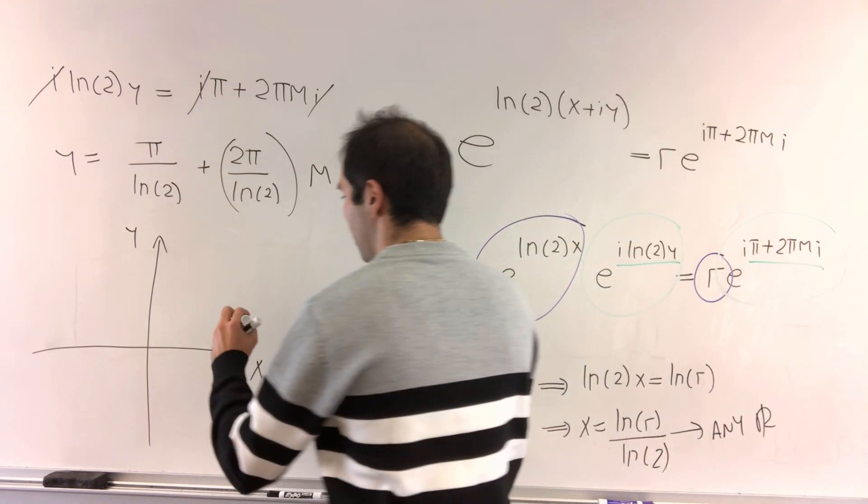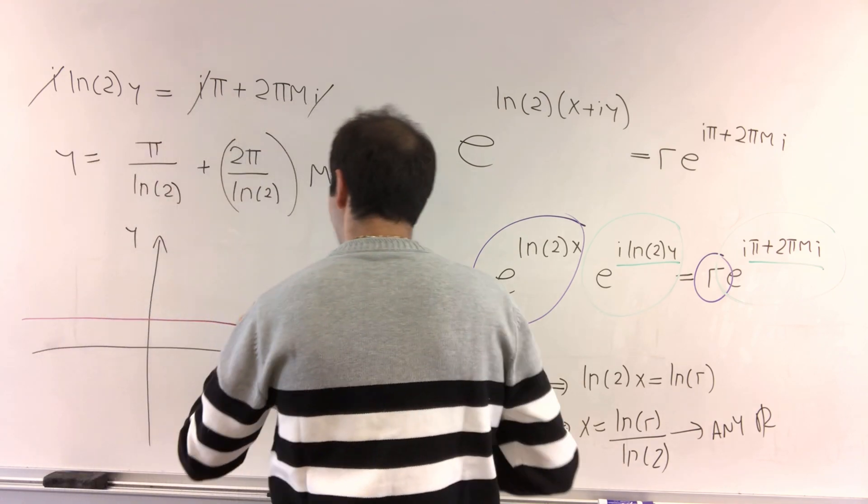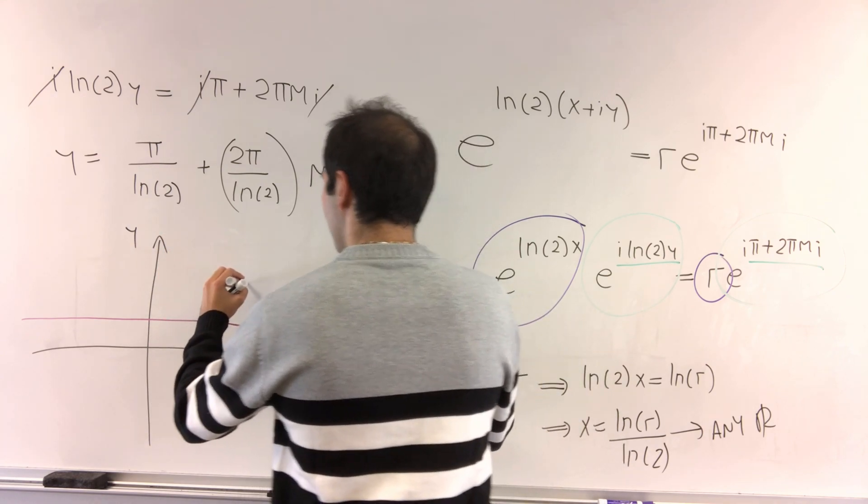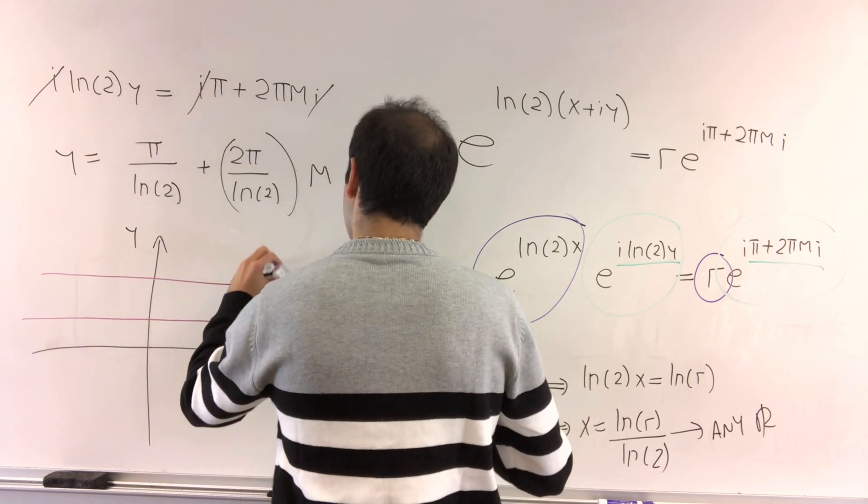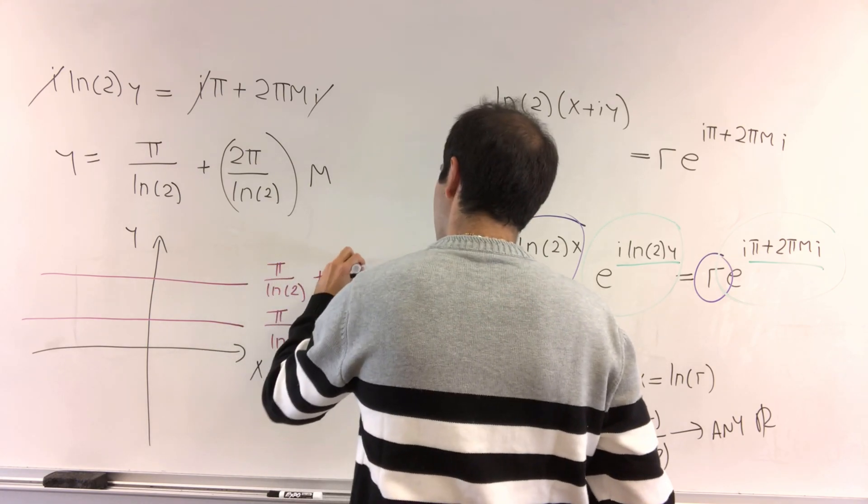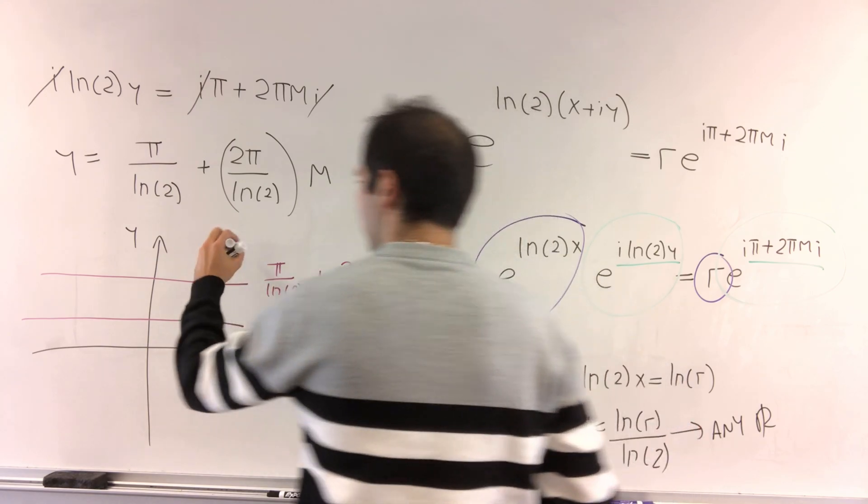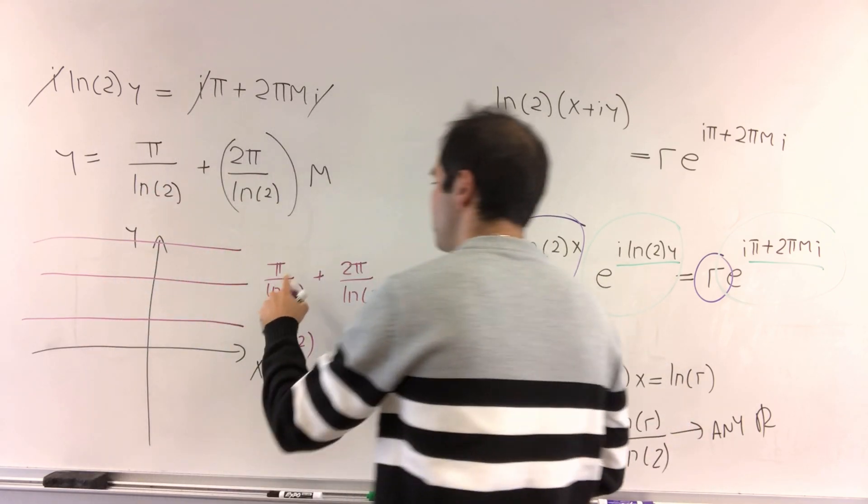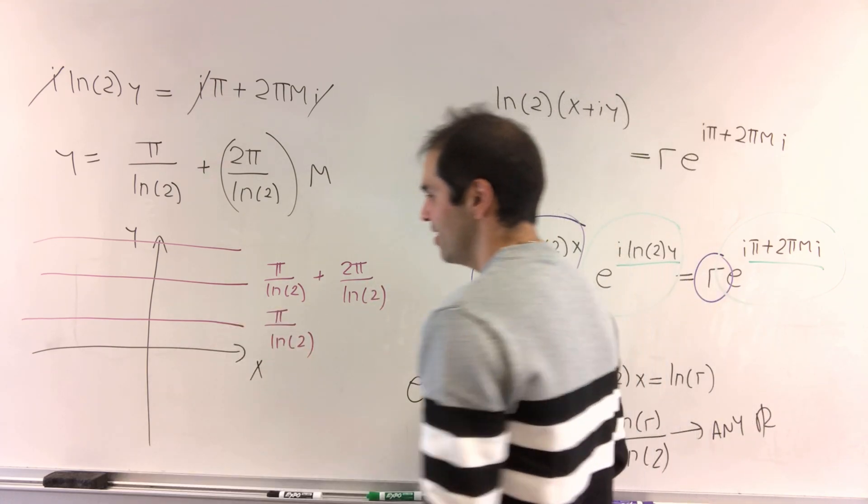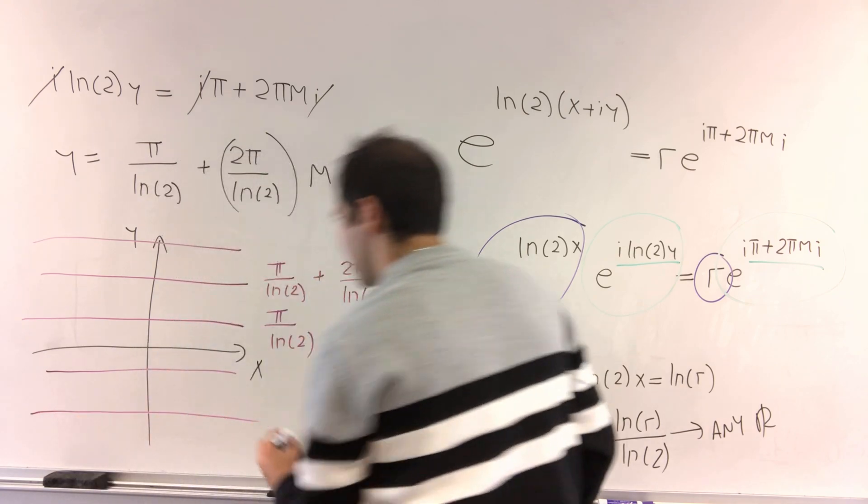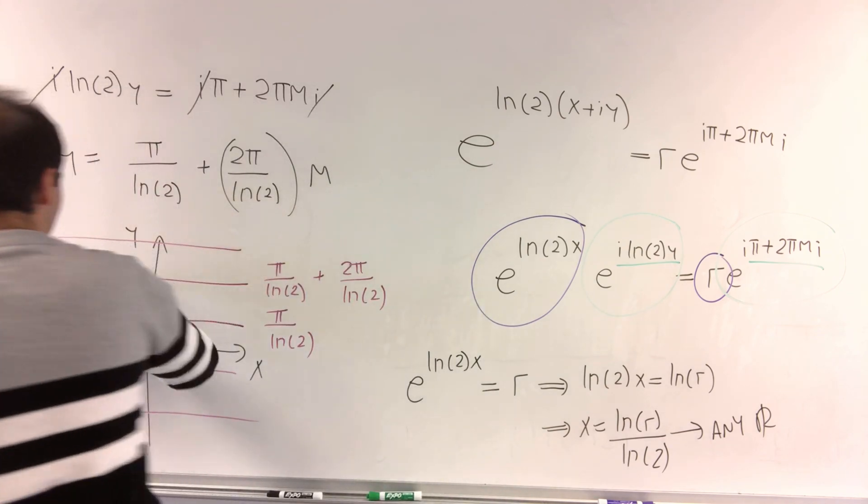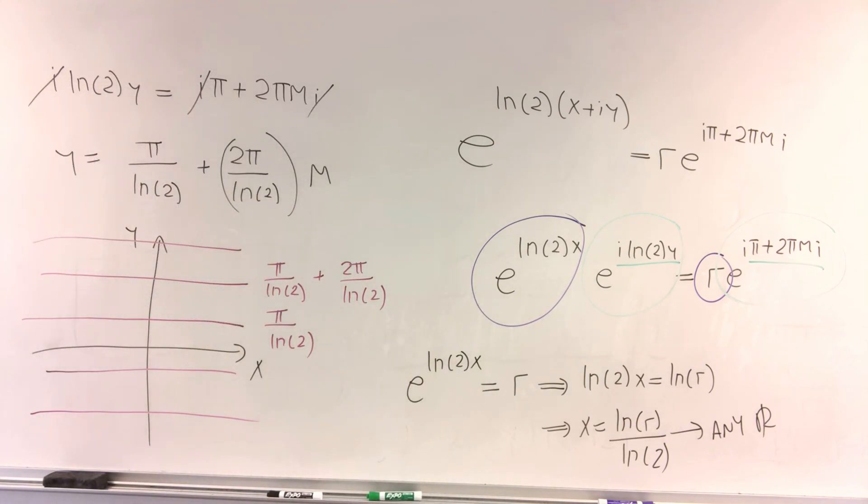So the first thing would be the line y equals pi over ln of 2, and the second one would be pi over ln of 2 plus 2 pi over ln of 2. And then continuing, the next one would be pi over ln of 2 plus 4 pi over ln of 2. And similarly for negative things. So if you want to figure out when 2 to the x is negative, it just happens on all those lines.